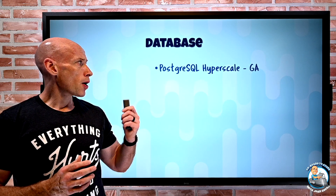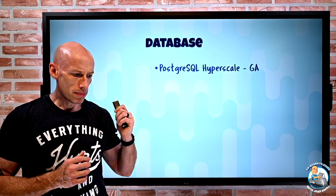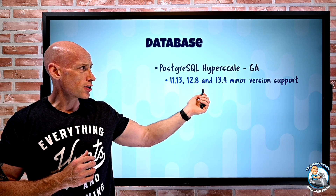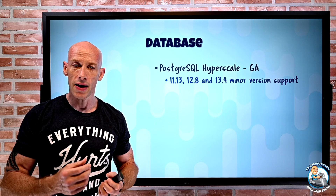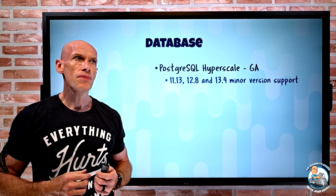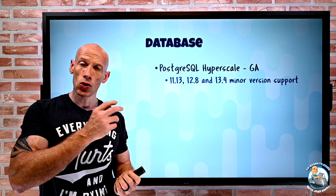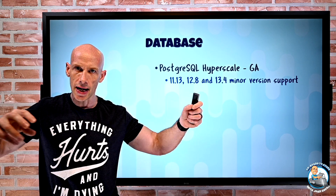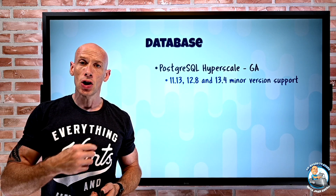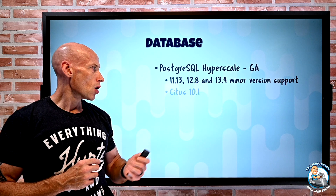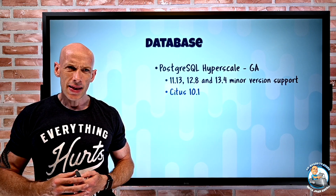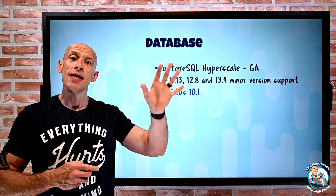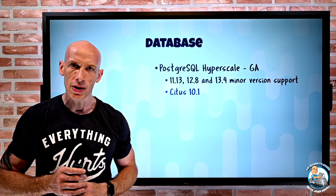On the database side, PostgreSQL Hyperscale GA features support for versions 11.13, 12.8, and 13.4 minor versions of PostgreSQL — what Hyperscale was built on top of. What makes it Hyperscale is it uses the PostgreSQL Citus extension, giving things like distributed tables where I can shard data over multiple instances, and certain tables can be replicated between nodes for lookups. Now it supports Citus 10.1, which was a performance increase and bug fix release, giving that distributed set of capabilities.